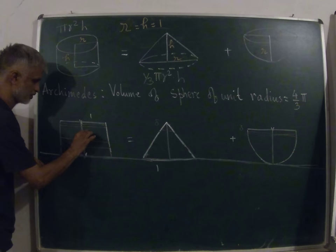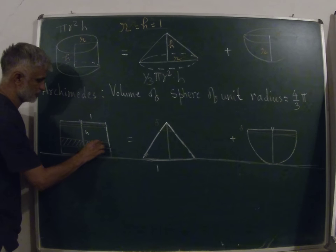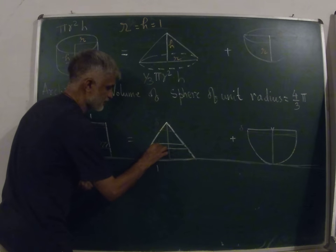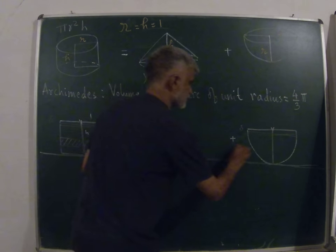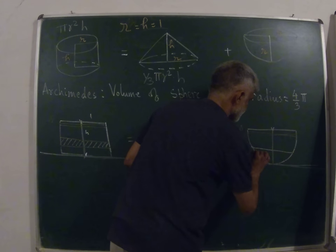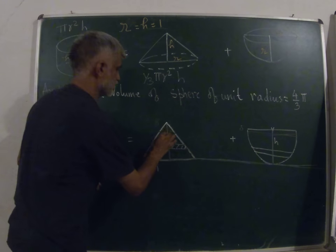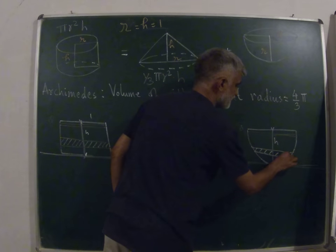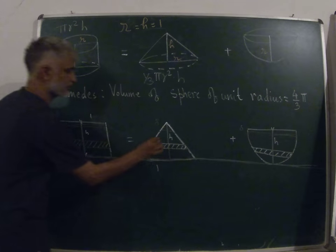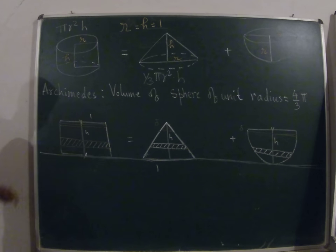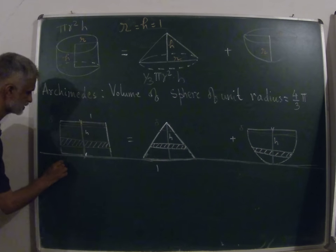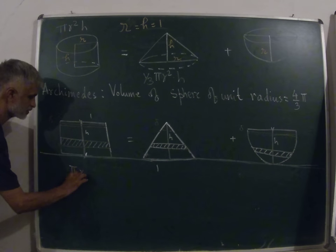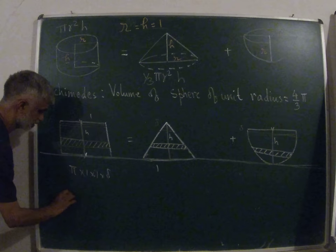What we're going to prove is that a particular slice at some height h, this volume of this slice will be equal to the volume of this slice plus the volume of the slice here, at the same height h. Since this is true for every slice, if we manage to prove that this volume is equal to this volume plus this volume, then we are done.